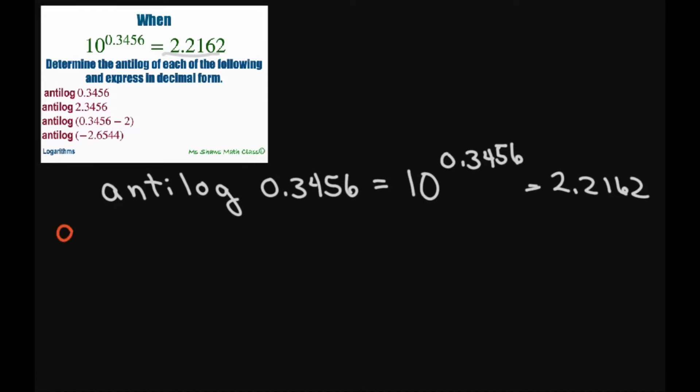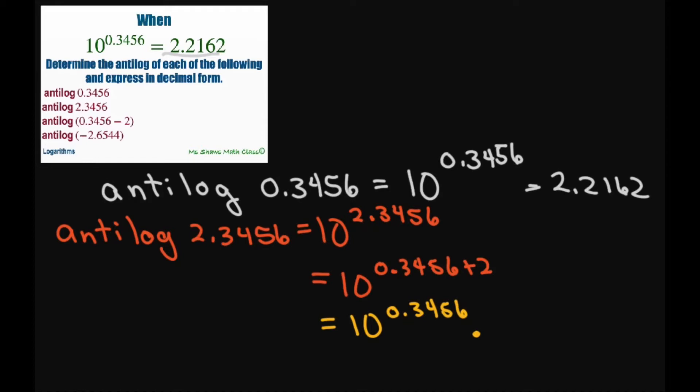So now we're going to do the antilog of 2.3456. Now we can write this as 10 to the power of 2.3456. This is going to equal 10 to the power of 0.3456 plus 2. So this gives you 10 to the power of 0.3456 times 10 squared.